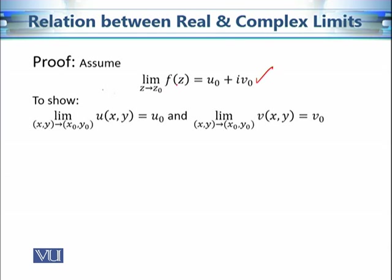We are going to first assume that the complex limit of this complex valued function is u₀ plus i·v₀, and then we are going to prove that these two real limits are u₀ and v₀. When we say that this limit exists, it means that it satisfies the definition of limit of a complex valued function that we have discussed in our earlier discussions.